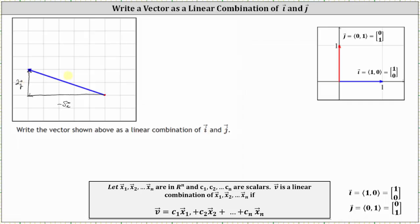So if we let the given vector be vector x sub two, we can write vector x sub two as a linear combination of the unit vectors i and j as negative five times the unit vector i plus two times the unit vector j. This is what the question is asking for, and it also tells us the component form of vector x sub two using angle brackets would be negative five comma two, or using a column matrix with entries negative five, two.